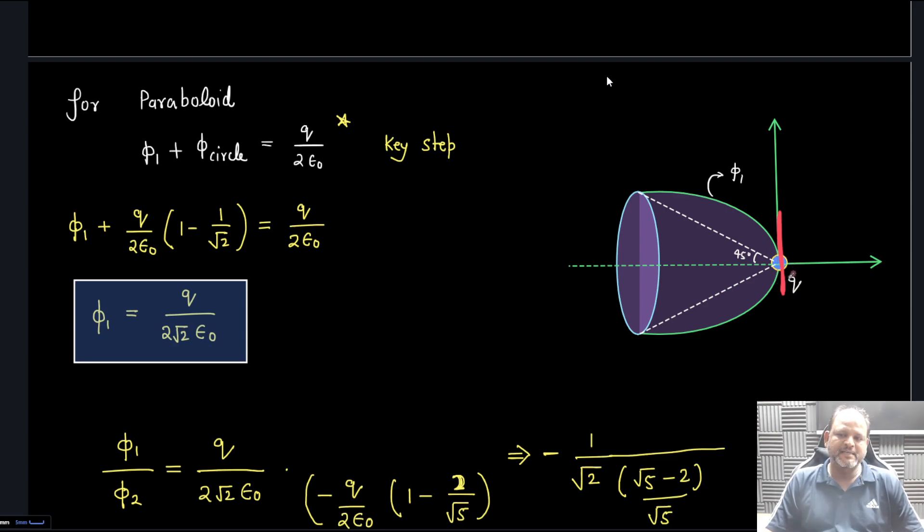Smaller the size, almost half will be present. So I can write Φ₁ + Φ_circle = Q/(2ε₀). This time R and H are equal, so this angle is 45 degrees. Φ₁ is Q/(2ε₀)(1 - cos θ), cos θ is cos 45° = 1/√2. If you simplify Φ₁, you get Q/(2√2ε₀).